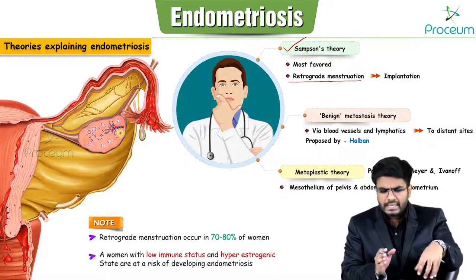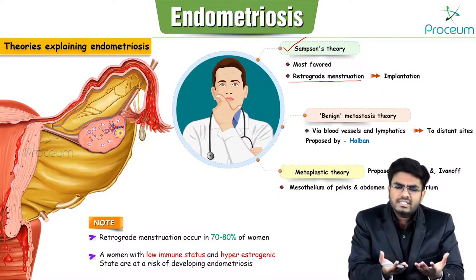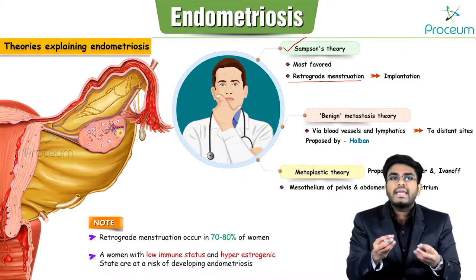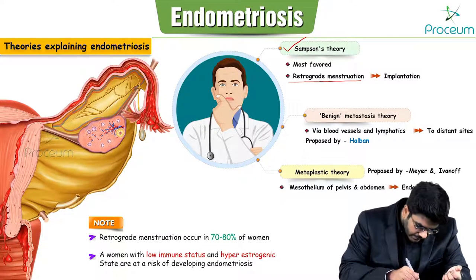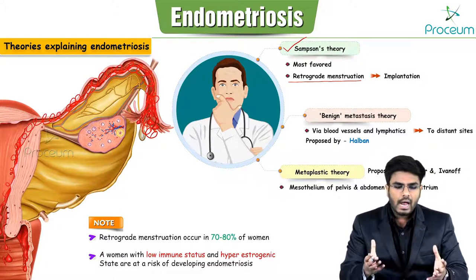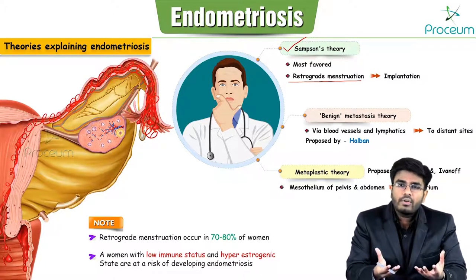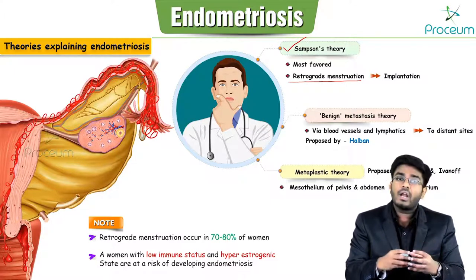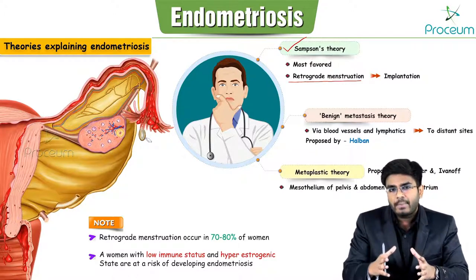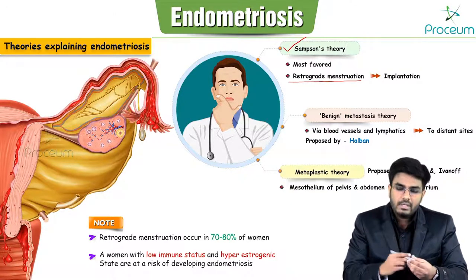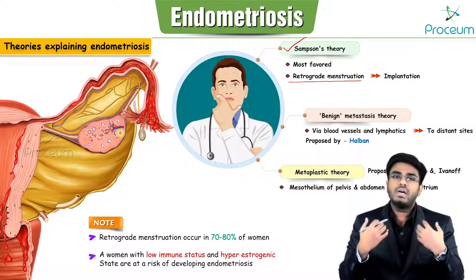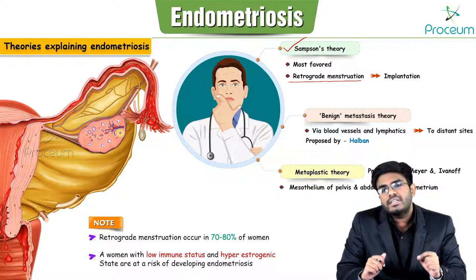In normal menstruation, the endometrium sheds and expels via the vagina. But in retrograde menstruation, the endometrium gains access into the fallopian tubes and bleeds into the pelvic cavity. These endometrial deposits may fall onto the ovaries, into the pouch of Douglas, or onto the intestines. This is Sampson's theory of retrograde menstruation.